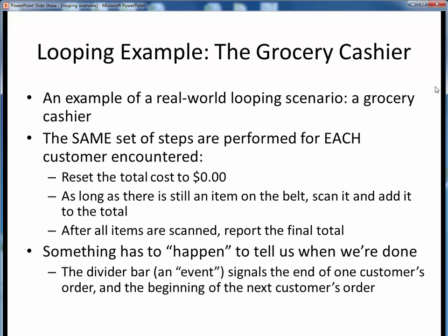We said we were going to consider event-controlled looping first, so here's a real-world example: a grocery cashier. We all know what happens at the checkout counter of a grocery store. We load all the items from our cart onto the conveyor belt, and the cashier performs the same steps all shift long for every customer. First, they reset our total to $0, then for every item on the belt, they run it past the scanner, make sure that it goes boop, and it gets added to the total. They keep doing this until there are no more items left, at which time they give us the final total and we pay up.